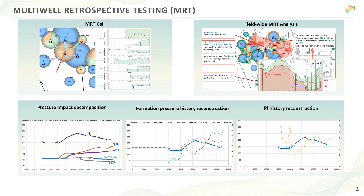Every transient response is a mathematical function representing the pressure behavior in a well when another well has been launched with a unit rate. A drawdown transient response is the response in the well itself — what pressure will I have if I produce with just one barrel per day? Cross-well transient responses answer: what pressure response will I have in the offset well if my well starts producing at one barrel per day? This set of mathematical functions gives a model of a whole block of interfering wells. I can then reconstruct the formation pressure history, productivity index, and decompose which well is draining or supporting pressure. Let's go to case number one.